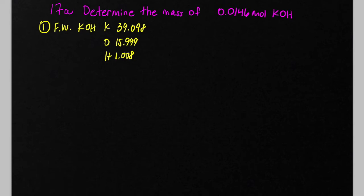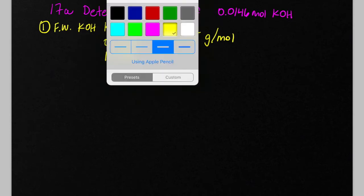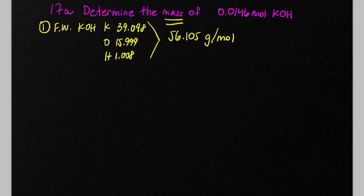We add all of these up with our calculator, and we get a grand total of 56.105, and again, the periodic table gives you grams per mole, so they don't really specify grams here, but that is the unit of mass that we're obviously interested in here in chemistry.